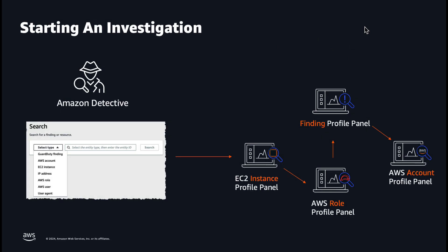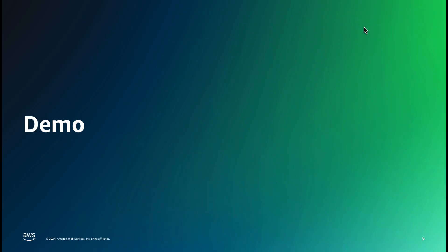You can use the Amazon Detective Investigations feature to investigate IAM users and IAM roles using indicators of compromise, which can help you determine if a resource is involved in a security incident. Now let's get started in the AWS console to see this feature in action.